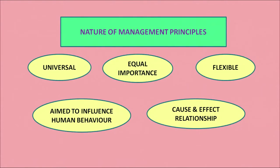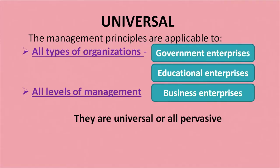The characteristics of management principles are: first, they are universal — applicable to all types of organizations, whether business or non-business organizations like educational and non-governmental organizations. They are also equally relevant for all levels of management. So irrespective of whether it is higher, middle, or lower level, these principles have universal applicability across all varieties of organizations.